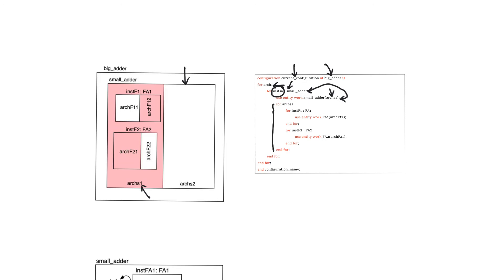SmallAdder under architecture ArcS1 has two instances, InstF1 and InstF2, which are instances of entities FA1 and FA2. Each of these instance entities has two possible architectures, and the specific bindings are shown shaded. Instance InstF1 is bound to one architecture, and instance InstF2 is bound to another, demonstrating how configurations can describe architectural bindings on a hierarchical level.